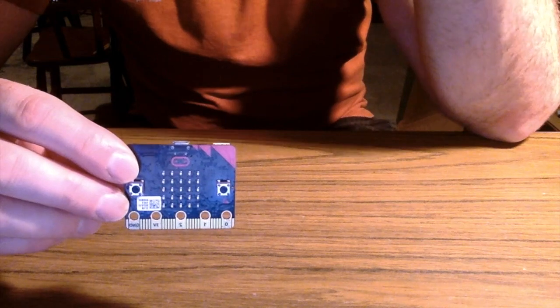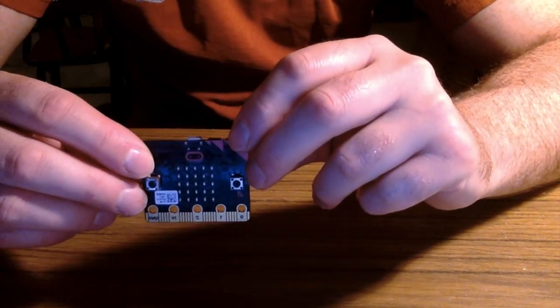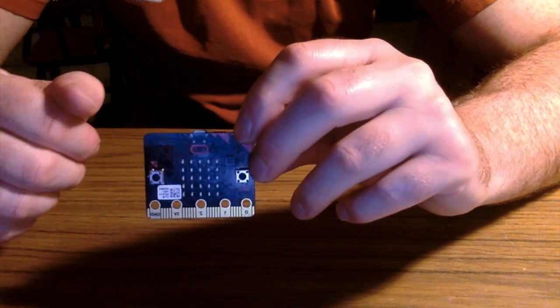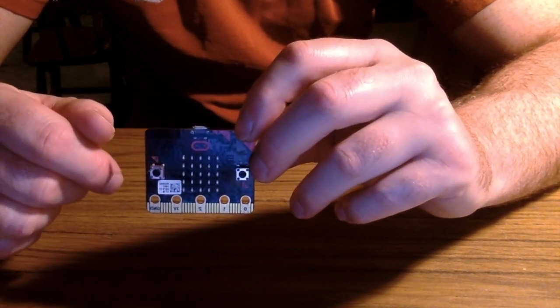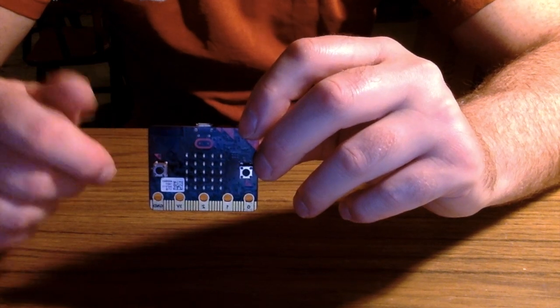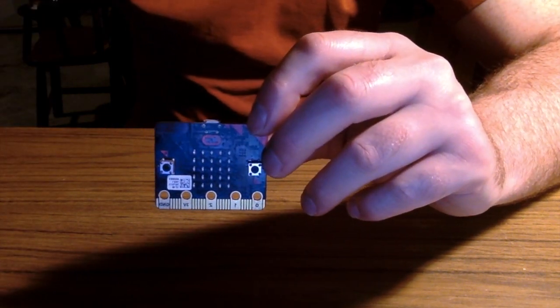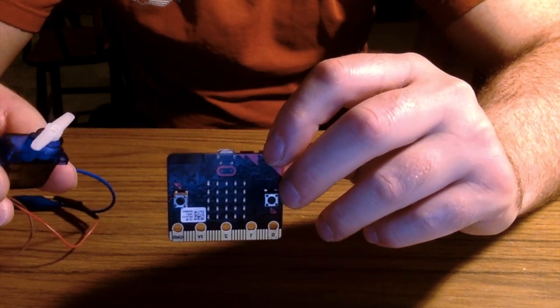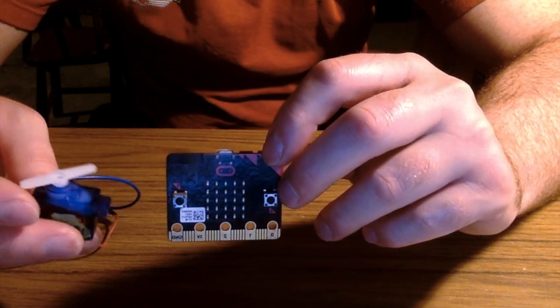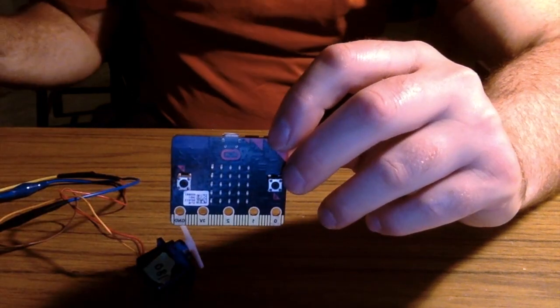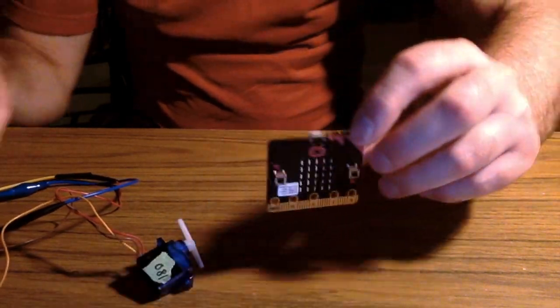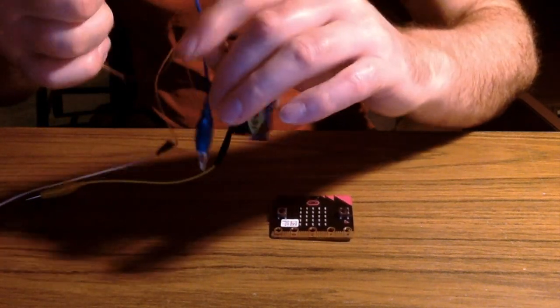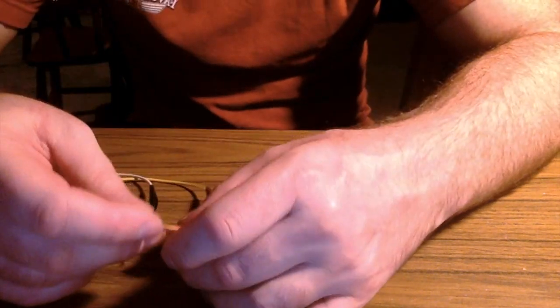So what we're gonna hook up is a little mini servo motor, an SG90 micro servo. Let's hook it up to the micro:bit. On the servo there is an orange wire, a red wire, and a brown wire, and I just spliced these wires onto some alligator clips so that they're easy to connect to the pins on the micro:bit.